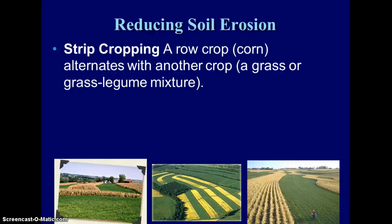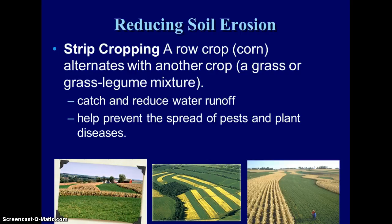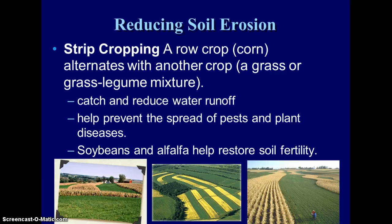Strip cropping means alternating crops in rows instead of leaving a field empty. You might have corn in one row and soybeans or grass in the next strip. This reduces water runoff and helps prevent the spread of pests — a pest that eats corn has to pass through a strip of another crop to spread. Some plants use nitrogen while others restore it, so alternating crops based on that means you don't have to leave fields empty for several years.